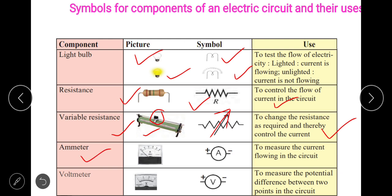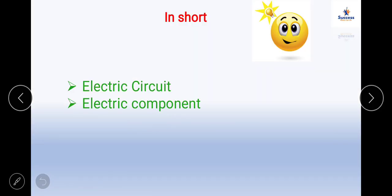There is an ammeter — it measures the flowing current in the circuit, and the ammeter is always connected in series. Whereas a voltmeter measures the potential difference between two points and is always connected in parallel to the circuitry. What is series and what is parallel, you will come to know in the future lecture.